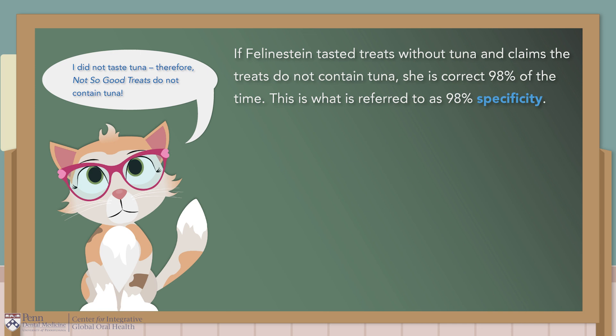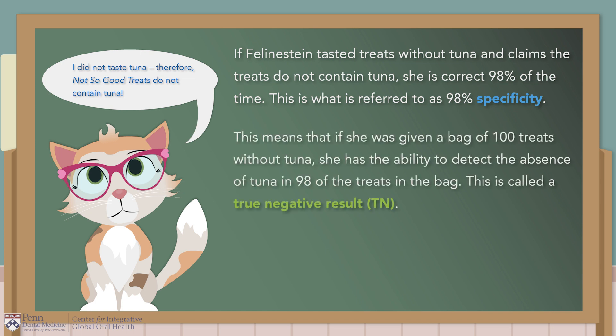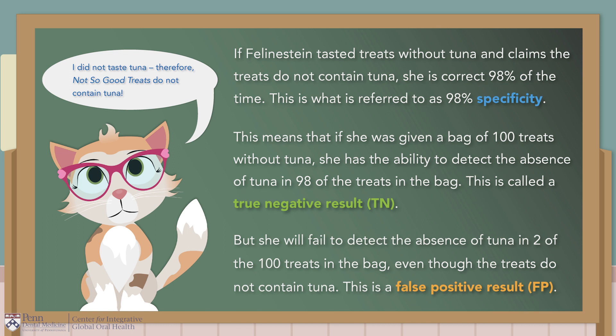If Feline Stein tasted treats without tuna and claims the treats don't contain tuna, she is correct 98% of the time. This is what is referred to as 98% specificity. This means that if she is given a bag of 100 treats without tuna, she has the ability to detect the absence of tuna in 98 of the treats, which is also called a true negative result. But she will fail to detect the absence of tuna in 2 of the 100 treats, even though the treats don't contain tuna — a false positive result.